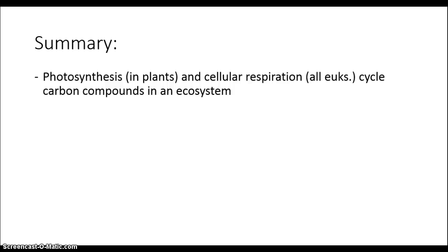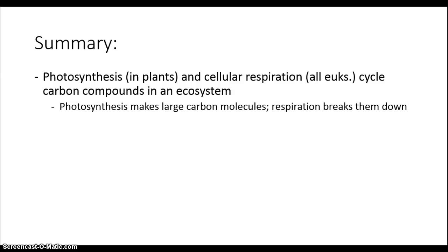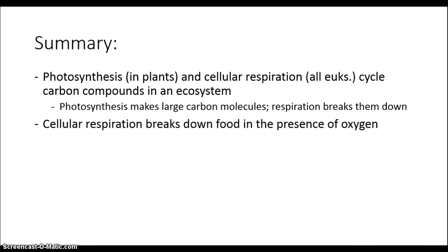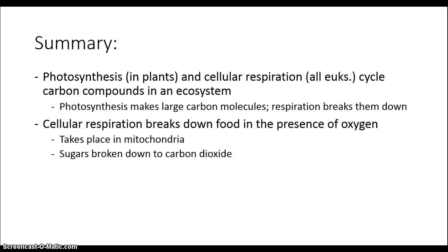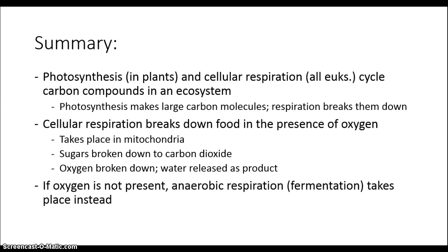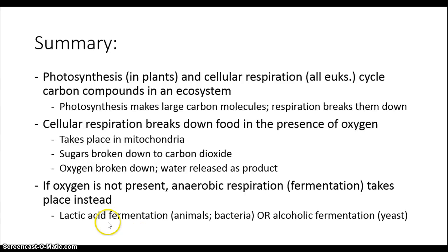In summary, the processes of photosynthesis and cellular respiration cycle a variety of materials, including carbon compounds, through the environment. Photosynthesis stores energy in large carbon molecules, whereas respiration breaks these down into carbon dioxide. Cellular respiration requires oxygen to be present, takes place in the mitochondrion, and creates carbon dioxide and water as byproducts. If oxygen is not present, anaerobic respiration or fermentation takes place instead. There are two types — lactic acid fermentation or alcoholic fermentation — and we harness both of these processes to make a variety of foods and other products for human society.